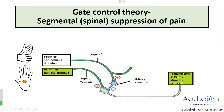We need to activate the inhibitory interneuron, which can be done by simultaneous activation of the touch fibers, that is the A-beta fibers. This is possible when you rub the painful area.